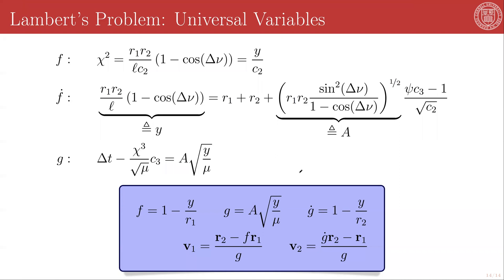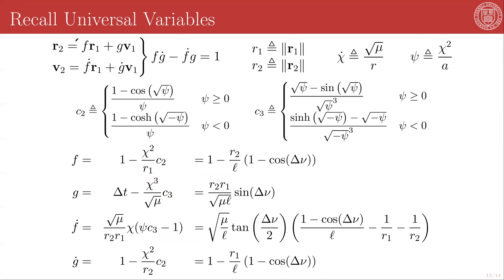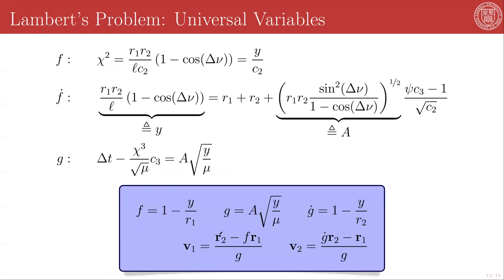And mu, which are part of the problem statement, and the semi-parameter of a proposed transfer orbit. So bringing this back to the very beginning, we can use the fundamental relationships of the f and g functions to solve for v1, which gives us this relationship, and for v2, which gives us this relationship.